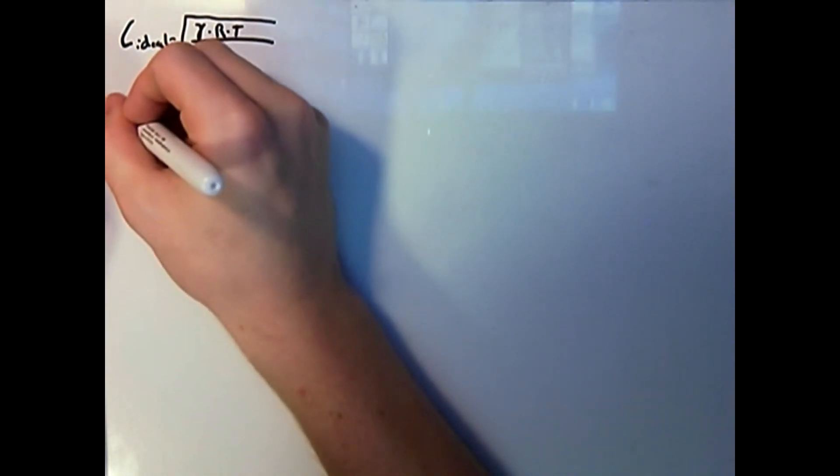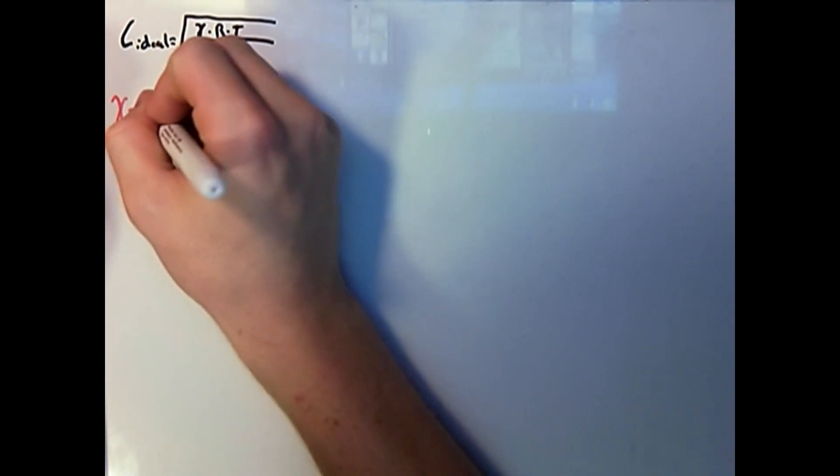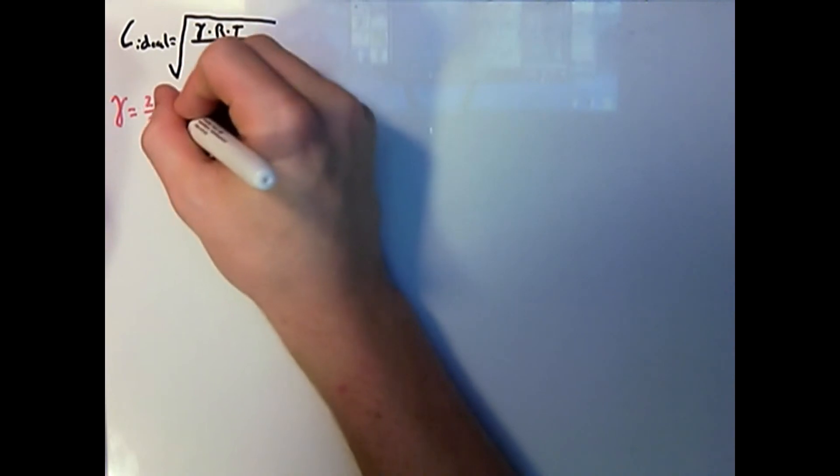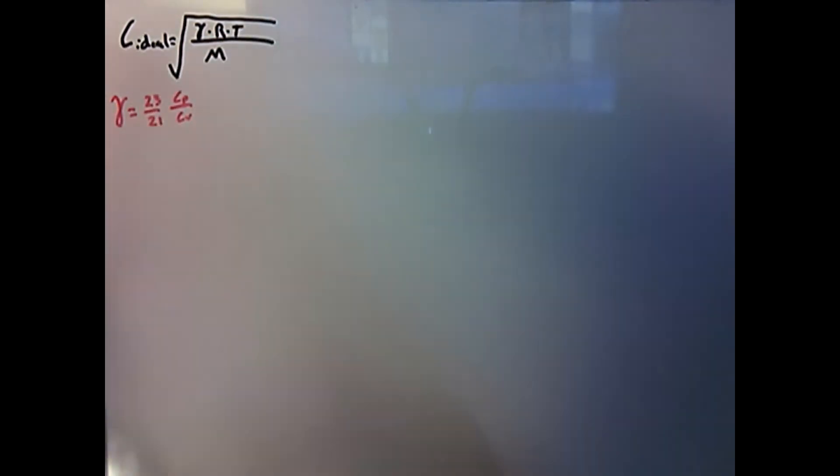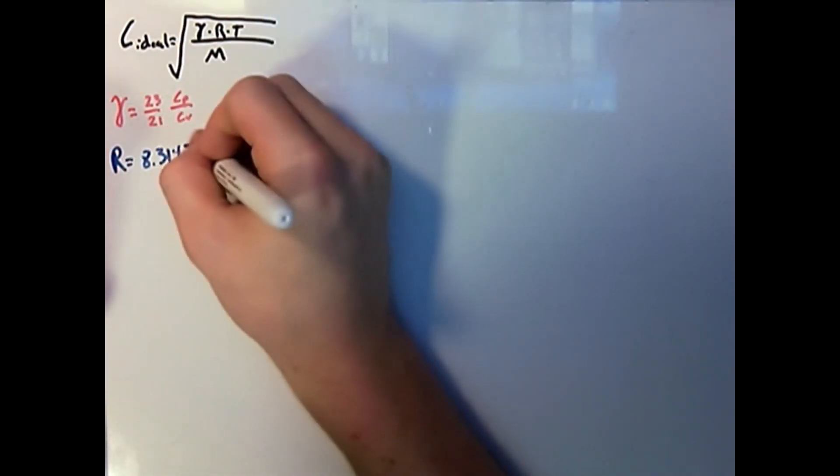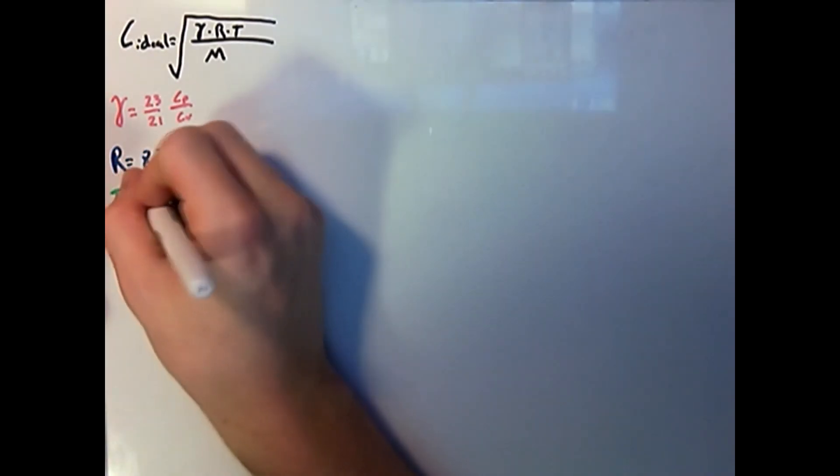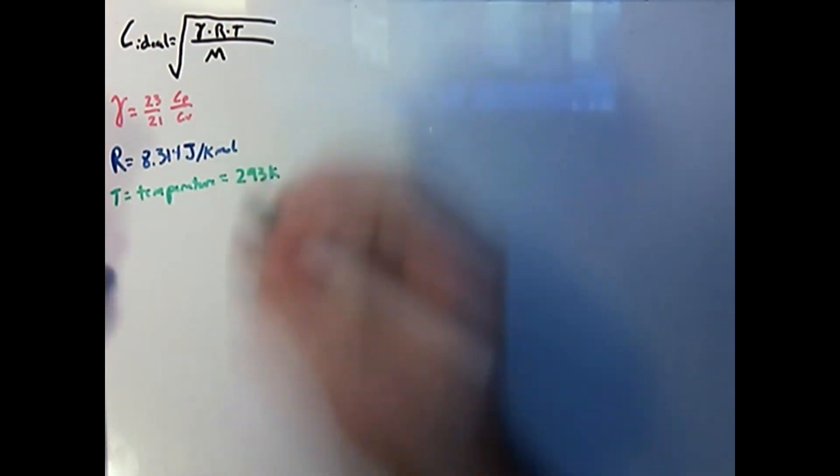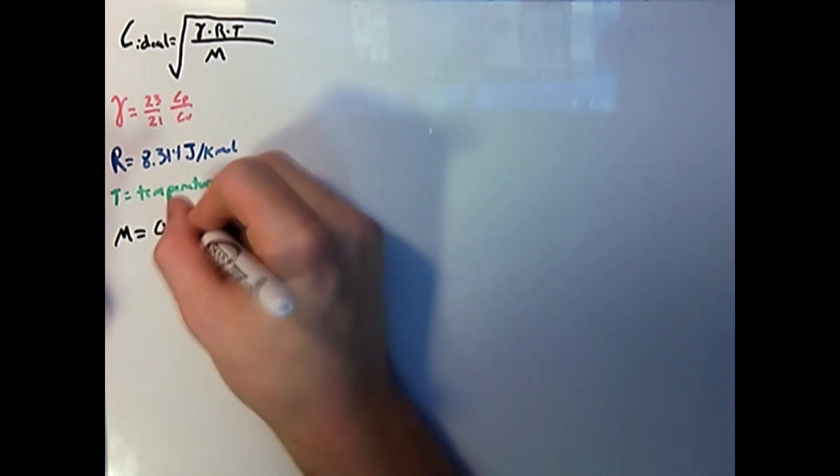Most people know about helium. Let's talk about a gas most people don't know about. Sulfur hexafluoride is a gas that can actually decrease the pitch of your voice. Let's take a look. Let's take a look at the speed of sound equation for sulfur hexafluoride. The gamma for this molecule is 23 divided by 21. This is found by calculating the ratio of Cp over Cv. R is still 8.314 joules per kelvin mole, T is still 293 kelvin, and the molar mass is 0.146 kilograms per mole.